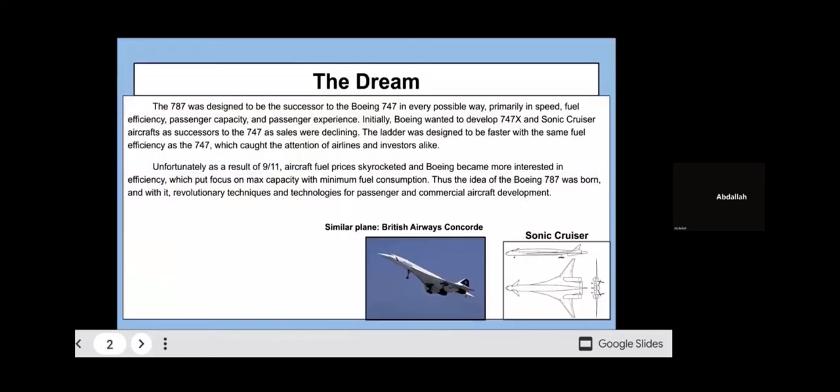So to start about how this all began, the dream if you would, the 787 was designed to be the successor to the Boeing 747 in a time where technology was improving and Boeing needed better airplanes. The idea for a successor to the 747 originated in 2001, at least officially announced, with the main candidates being the 747X, a more efficient version of the 747, and the Sonic Cruiser, a faster version that ran at the same gas efficiency.